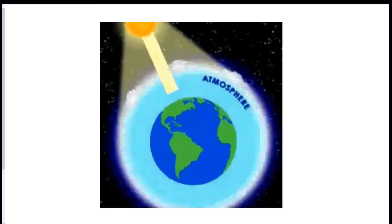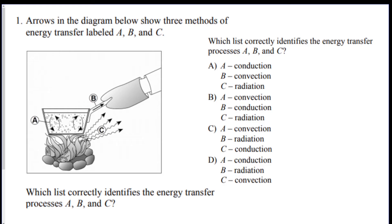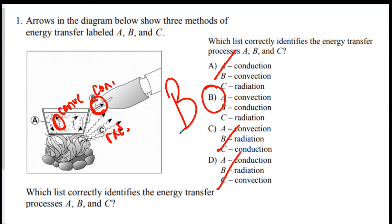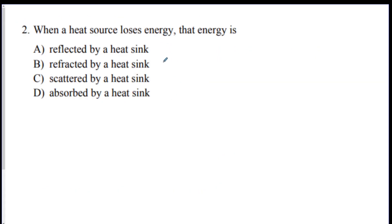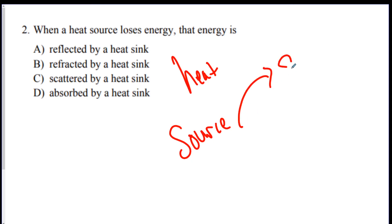Question 1: arrows in the diagram show three methods of energy transfer — which one correctly identifies them? The heat is transferring through a solid, so that's conduction; through a liquid, so that's convection; and then out into empty space, so that's radiation. The answer is B. Question 2: when a heat source loses energy, that energy is — heat always moves from source to sink, so the sink gets the heat from the source. The answer is D.